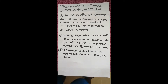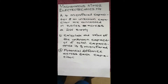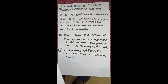The question is: a four microfarad capacitor and an unknown capacitor are connected in series across a 20 volt supply. The first question asks us to calculate the value of the unknown capacitor if total capacitance is 3 microfarad, and the second question asks for the potential difference across each capacitor.